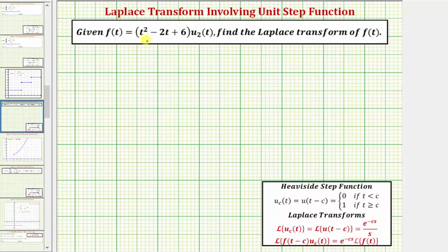We're given f of t equals the quantity t squared minus two t plus six times u sub two of t, and we're asked to find the Laplace transform of f of t.